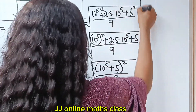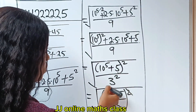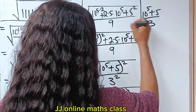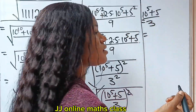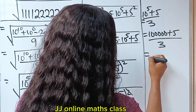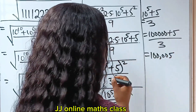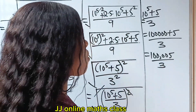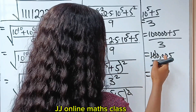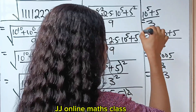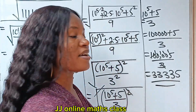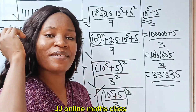Since we have a square root of a perfect square, the square root and the square cancel each other. We are left with (10 to the power of 5 plus 5) divided by 3. Now, 10 to the power of 5 is 100,000. So we have (100,000 plus 5) divided by 3, which is 100,005 divided by 3. Dividing gives us 33,335, and that is our final solution. Thank you so much for watching — have a lovely day!